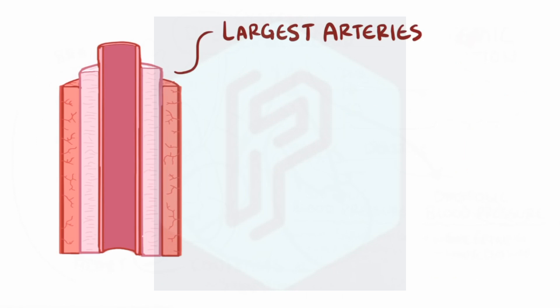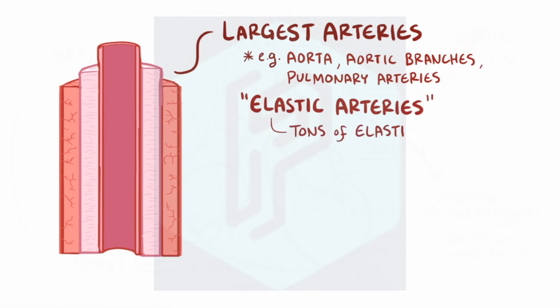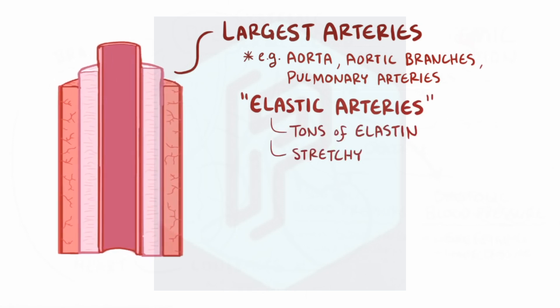So the largest arteries closest to the heart, which are the aorta, its main branches, and the pulmonary arteries, have so much elastin in their tunica externa and tunica media that they're called elastic arteries. These guys are really stretchy, kind of like spandex, and this is what allows these arteries to keep their shape as well as absorb and even out the systolic and diastolic pressures.